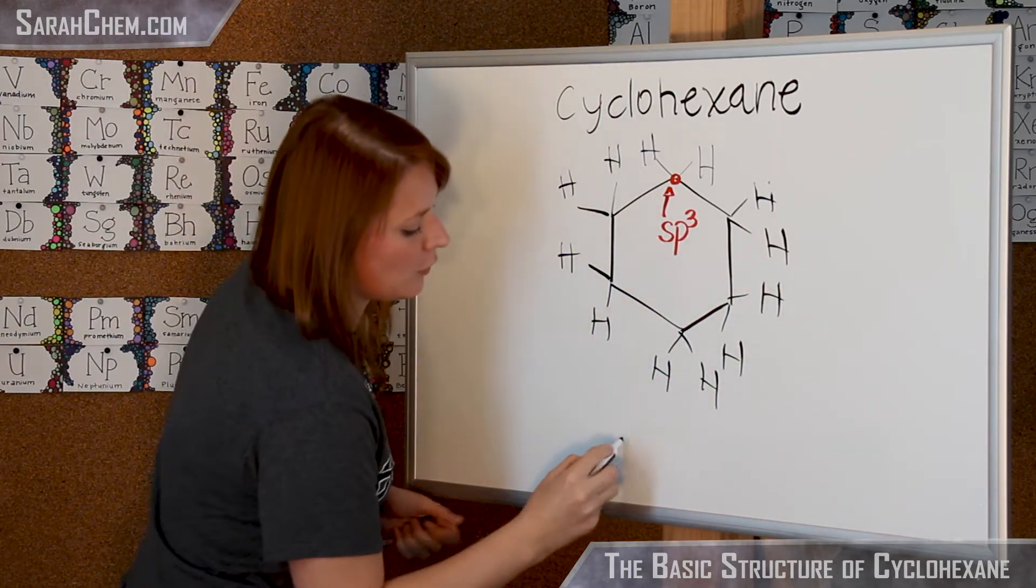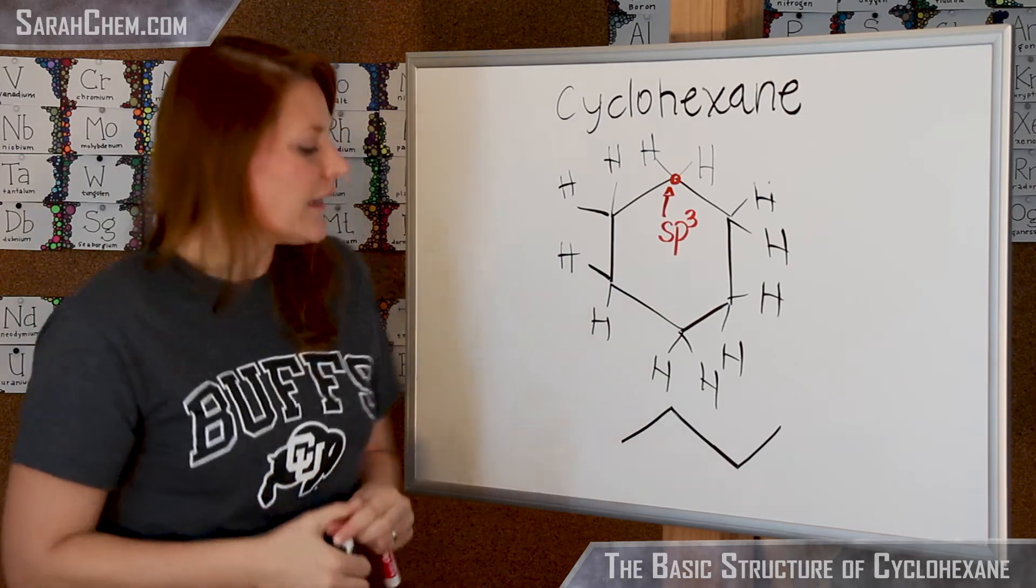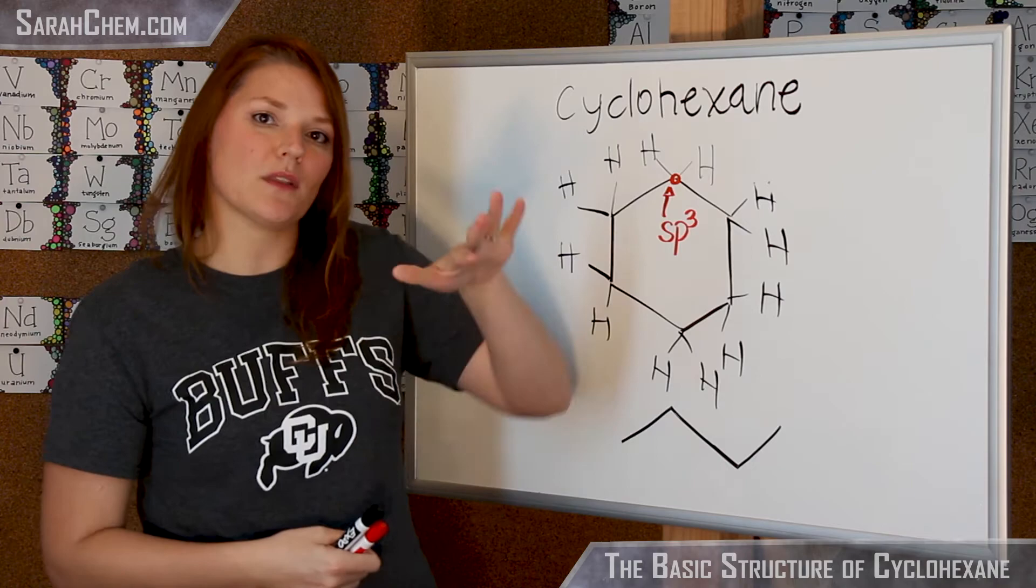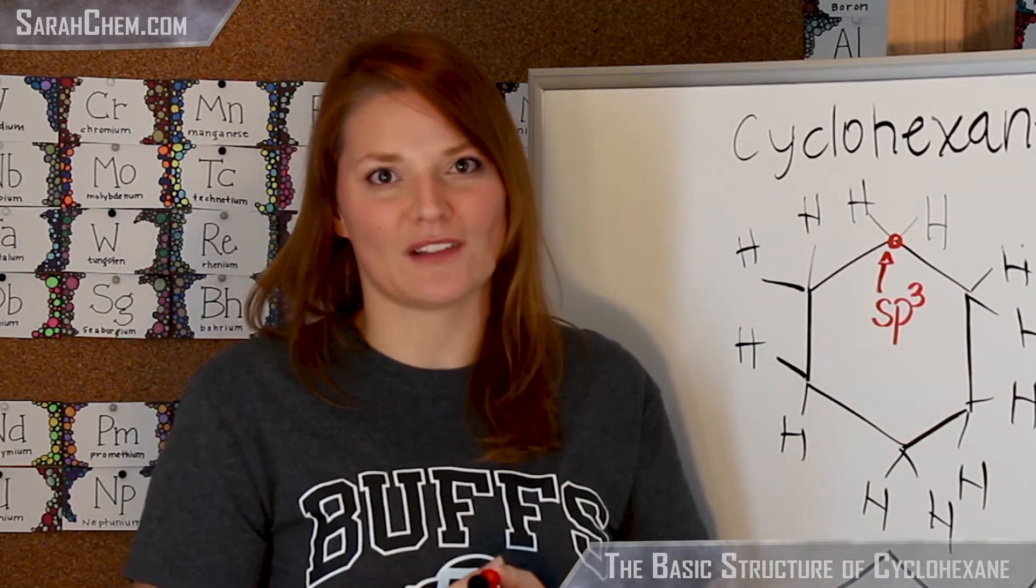So this would look more like this if it was put on its side. Now in this way we have some of our carbons that are going to be a little bit obscured. So usually we write it with a slight tilt. Let's take a look at what that slightly tilted molecule would look like.